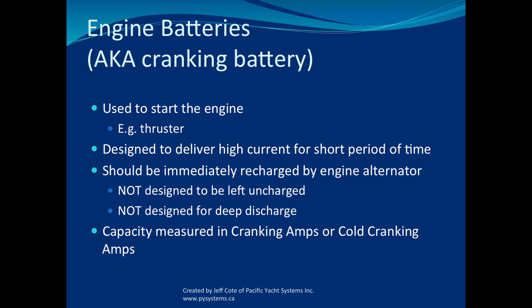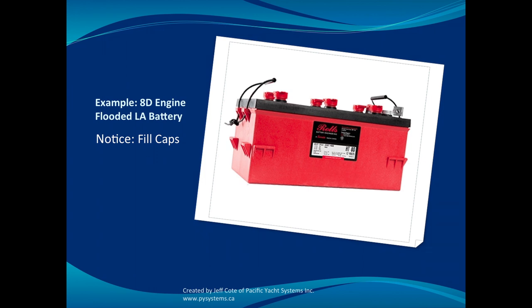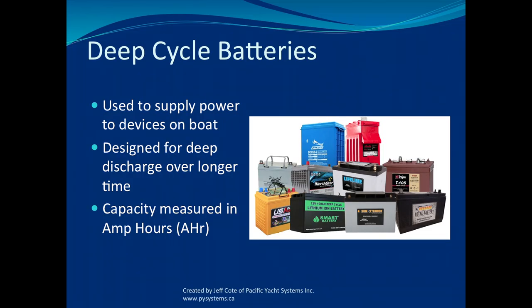Deep cycle batteries are batteries we use to run lights, water pumps, even an inverter, nav lights, stereo, and navigation equipment. Anything outside of running your engine should be on a house battery — those are deep cycle batteries. They're meant, like a marathon runner, to discharge slowly. Some people don't recharge their batteries for three days on the hook — they get to a destination and that battery slowly discharges for three days, then gets a charge. The unit of measure for deep cycle batteries is the amp hour.